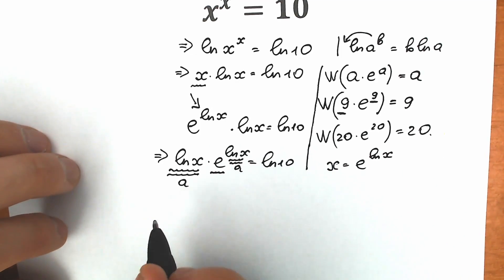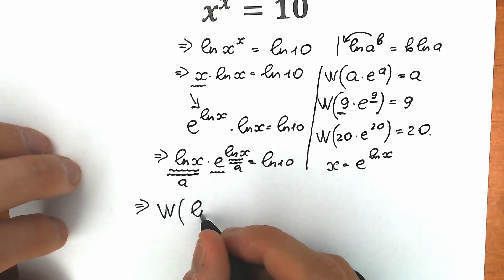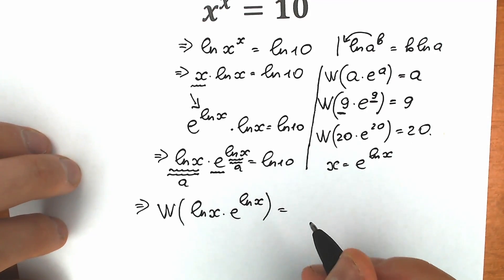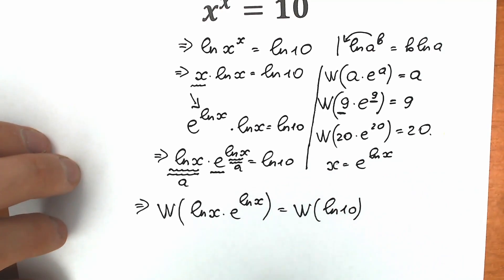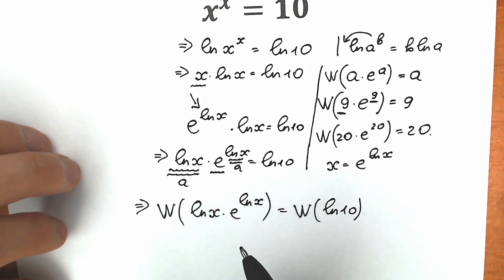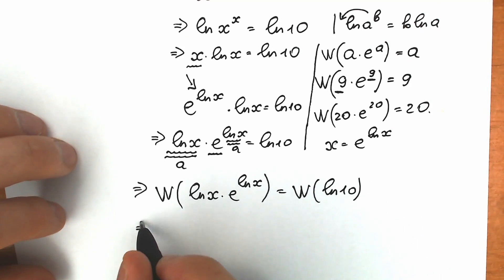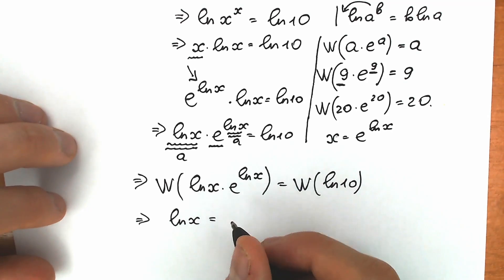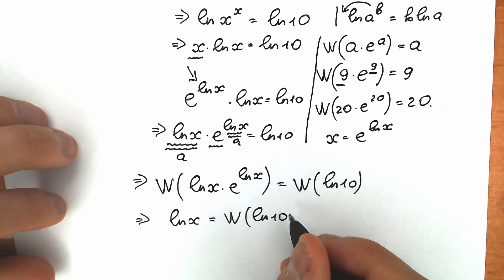Let's apply Lambert W function on both sides. Lambert W of natural log x times e to the power natural log x equals Lambert W of natural log 10. On the left side, we get only our a, which in our case equals natural log x. So on the left side we have natural log x, and on the right side we have Lambert W of natural log 10.